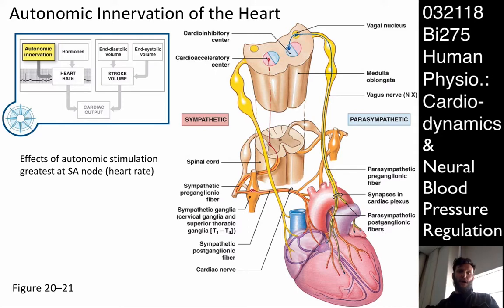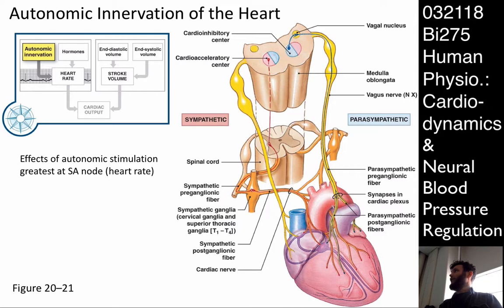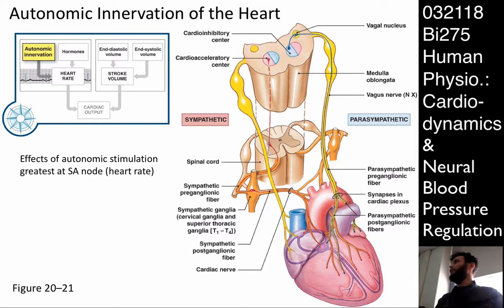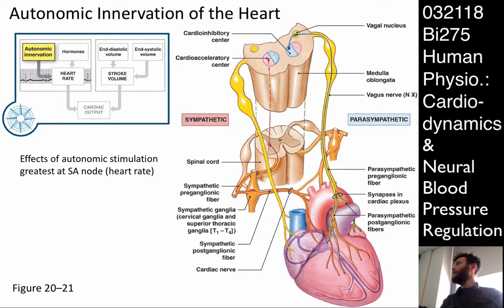There are times when both autonomics can be engaged — they do have some overlapping functions. But mostly the simplistic axioms hold true: fight or flight for the sympathetic nervous system and rest and digest for the parasympathetic. The sympathetic fibers descend through the spinal cord. In the sympathetic nervous system, the neuronal projection travels down through the spinal cord to have a synapse in the lateral gray horn somewhere in the spinal cord.